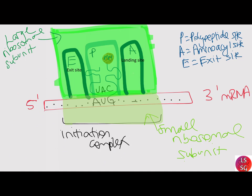When the translation complex is formed, the transfer RNA binding region of the ribosome consists of three compartments: the aminoacyl or A-site, which binds to the incoming charged aminoacyl transfer RNAs; the peptidyl or P-site, which binds transfer RNAs carrying amino acids that have formed peptide bonds with the growing polypeptide chain; and the exit or E-site, which releases dissociated transfer RNAs so they can be recharged with amino acids. The initiator transfer RNA carrying methionine occupies the P-site at the beginning of the elongation phase for both eukaryotes and prokaryotes.